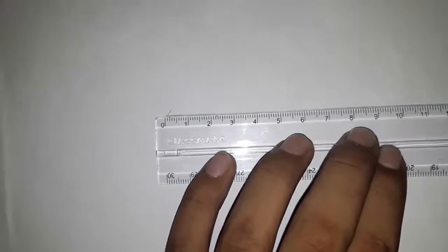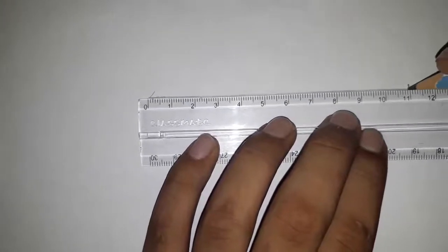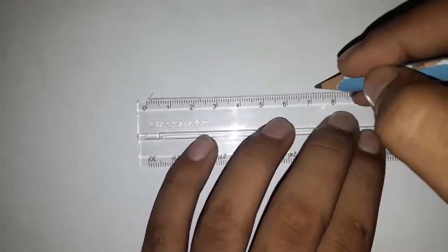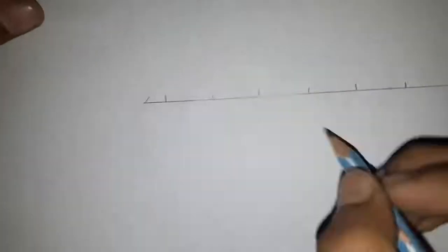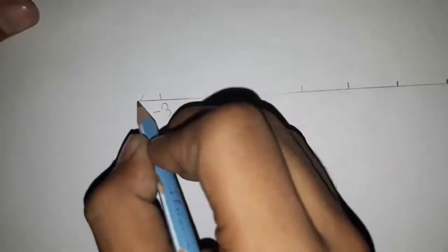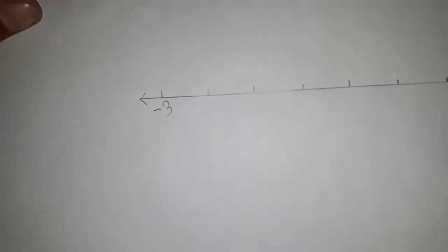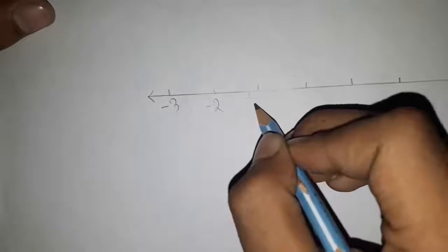Mark the points: one, two, three, zero, minus one, minus two, minus three. Now write it: minus three, minus two, minus one, zero, one, two, three.